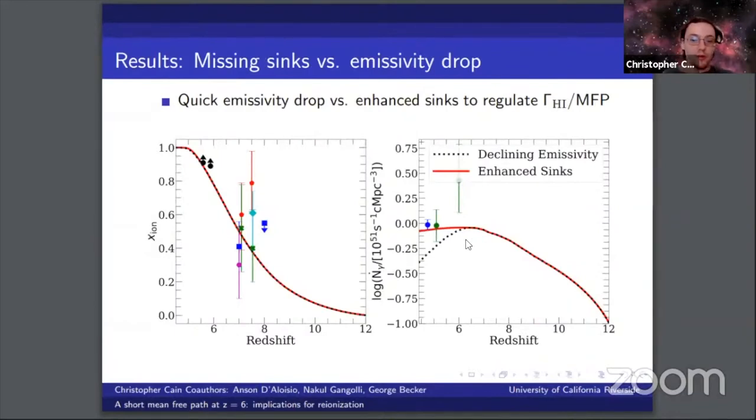The last question we considered is whether the quick drop in emissivity in our rapid model, which you can see in the black curve here on the right panel, is necessary to keep the photoionization rate and mean free path from outpacing the measurements at low redshift. What we did here was we allowed the emissivity to go flat after redshift 6.5, and we added additional sinks to our model by changing the opacity in our subgrid model until we were able to fit the evolution of the mean free path measurements at low redshift. We refer to this as our enhanced sinks model, shown here by the red curve.